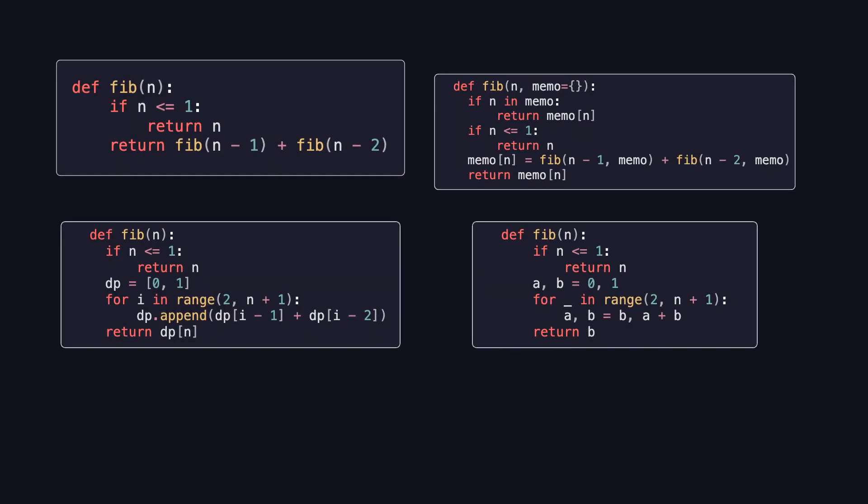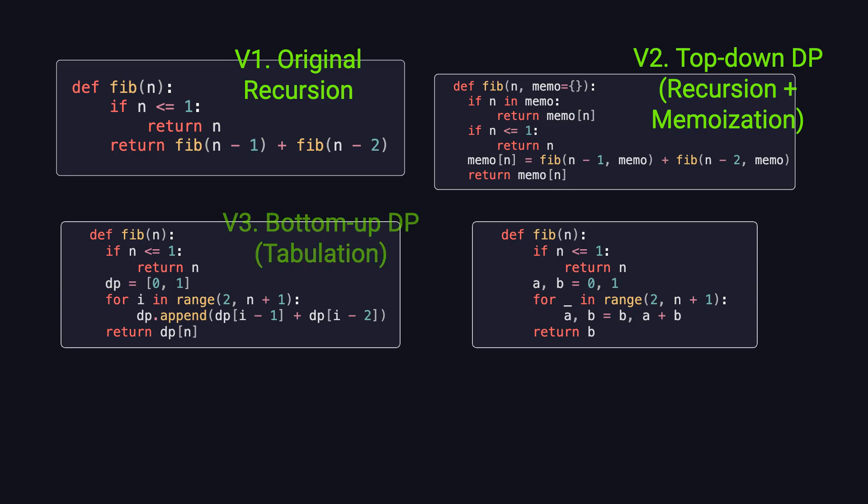Let's wrap things up. Today, we covered four different ways to solve the Fibonacci problem. First, we had plain recursion. It's simple to write, but really inefficient. Second, we added memoization, which gives us a top-down dynamic programming solution. Third, we switched to a bottom-up approach, also called tabulation, where we build the answer from smaller problems. And finally, we optimized the space by using just two variables, which is usually the best option in practice.